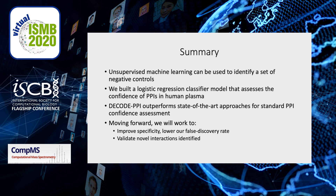To summarize, unsupervised machine learning allowed us to identify a set of negative controls. Our logistic regression classifier model, Decode PPI, assesses the confidence of protein-protein interactions in human plasma, and outperforms a state-of-the-art approach for standard protein-protein interaction confidence assessment. Moving forward, we will be working to improve Decode PPI's specificity and validating its novel identifications.